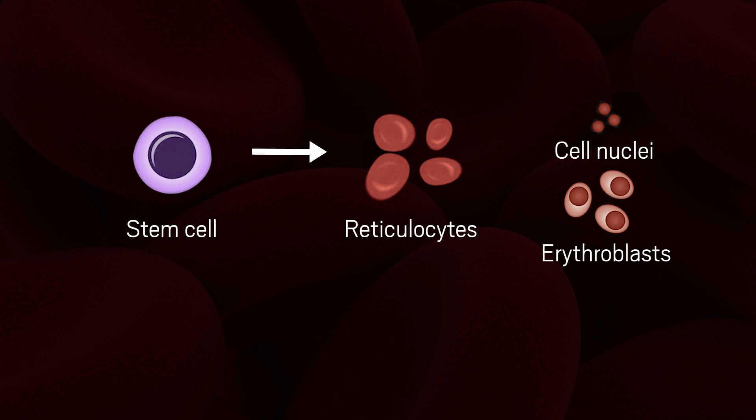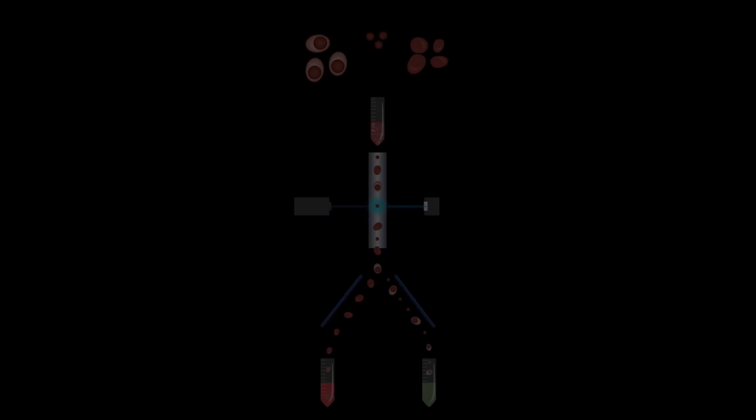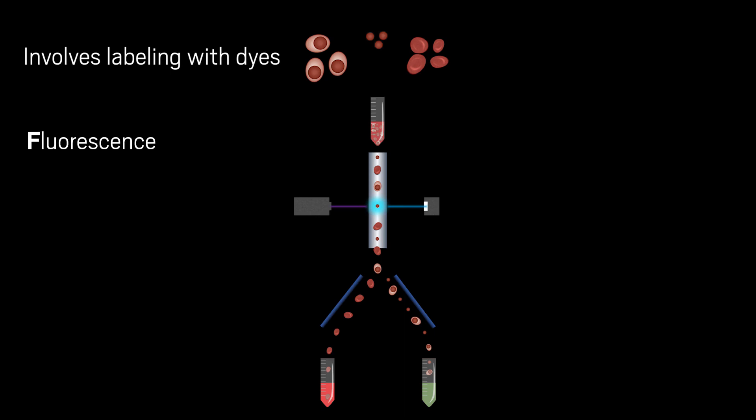One standard way scientists purify this mixture is through an expensive process that involves labeling the cells with dyes called fluorescence-activated cell sorting, or FACS.